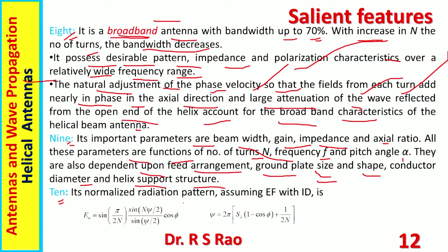Point ten: the normalized radiation pattern assuming end-fire with increased directivity is given by the expression [sin(φ/2N) × sin(Nψ/2) / sin(ψ/2)] × cos(φ), where ψ = 2π × S/λ × (1 − cos φ) + 1/(2N). The names of these quantities and their physical meaning are given in detail in the session on arrays and end-fire arrays.